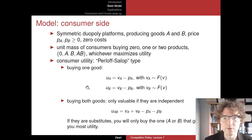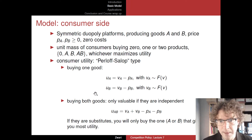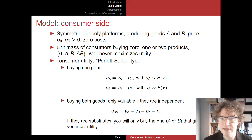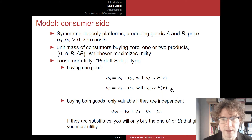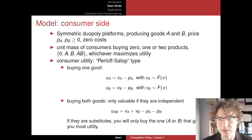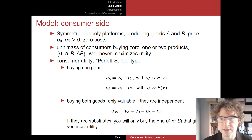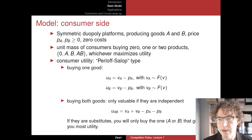The same applies for good B. The utility that consumers derive from consuming good B will be some VB, and the net utility will be VB minus the price PB that platform B charges. This VB is also distributed according to some distribution. We're going to look at the symmetric case where these two distributions are the same — independent from each other, but drawn from the same distribution.